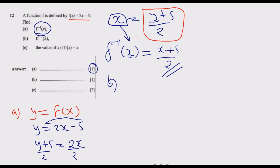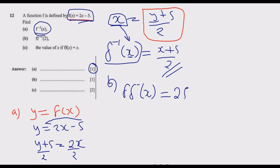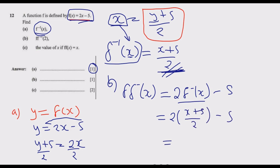Part b asks us to find f(f⁻¹(2)). First, let's find f(f⁻¹(x)): in the original function f(x) = 2x − 5, wherever there is x we substitute f⁻¹(x) = (x + 5) / 2. This gives us 2 × (x + 5) / 2 − 5. The 2s cancel, leaving x + 5 − 5, which simplifies to just x.